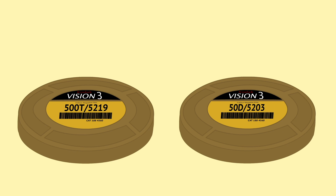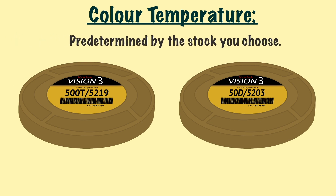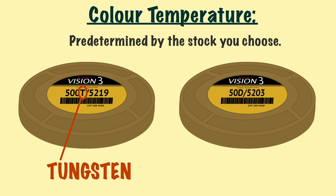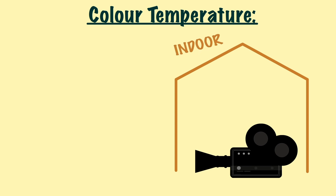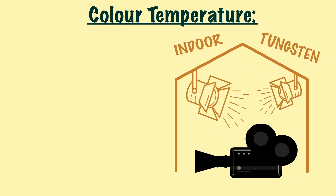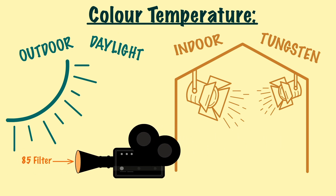The next thing to decide is what colour temperature to shoot at. Just like the exposure index, this will be predetermined with the stock you choose. You can either have designated T for tungsten or designated D for daylight. If you wanted the flexibility of moving from an indoor scene lit with tungsten lights to an outdoor scene lit with daylight, you could use an 85 filter to correct the colour temperature.